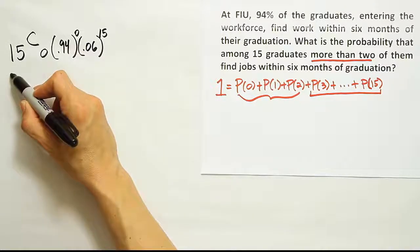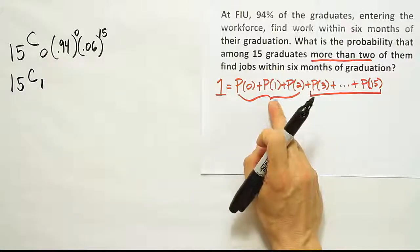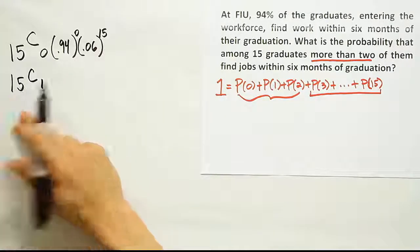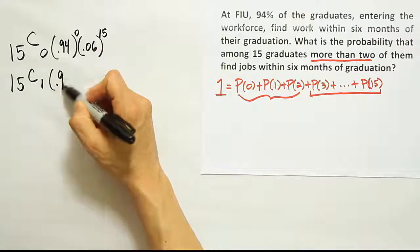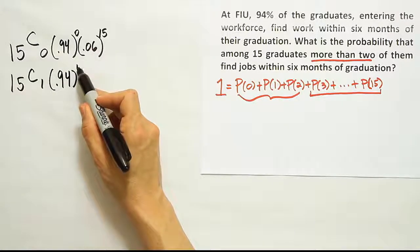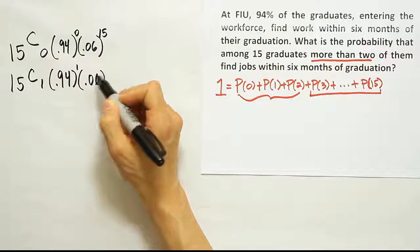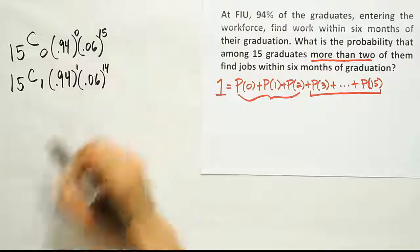Then we'll have the next scenario. It'll be 15 choose one. This is the x equals one scenario where just one out of 15 finds a job. So 0.94 to the first power, that's because one guy finds a job. The probability he finds a job is 0.94. And then 0.06, the remaining 14 people will not get jobs.